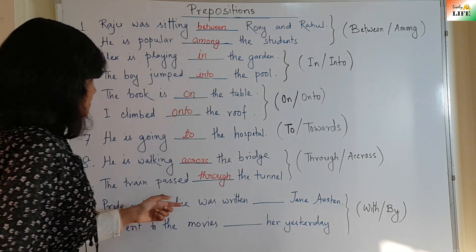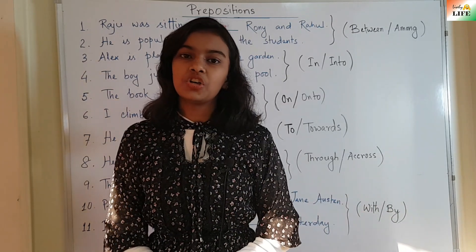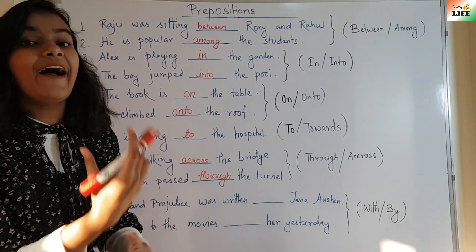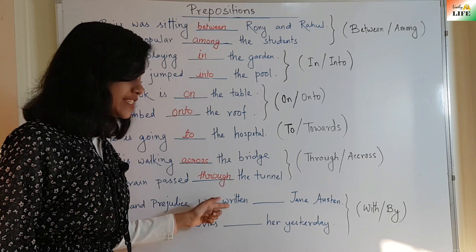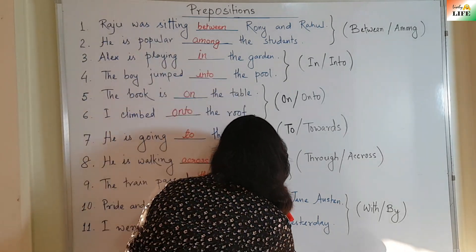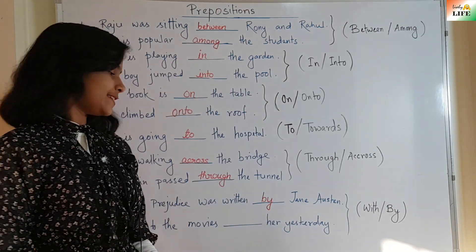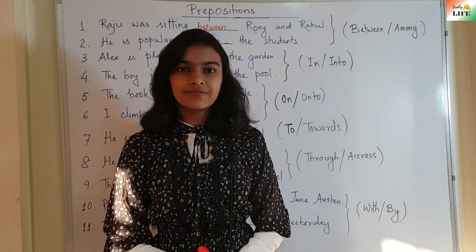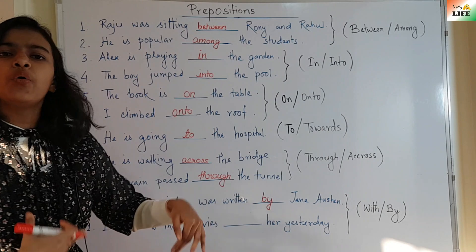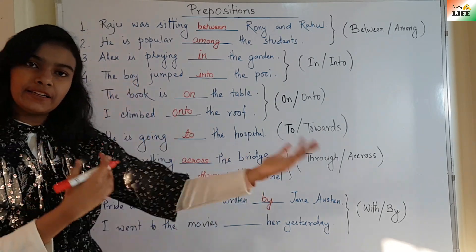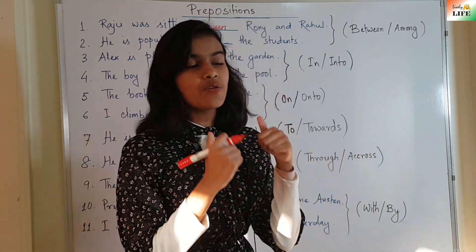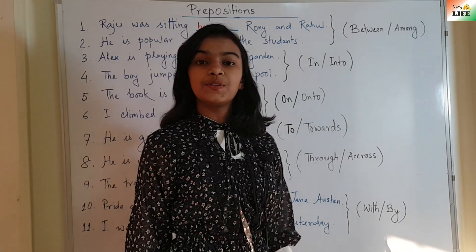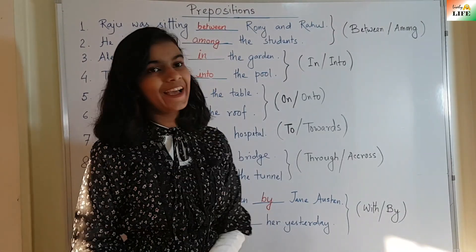Pride and Prejudice was written — Jane Austen. Jane Austen wrote Pride and Prejudice, it was created by her, so: Pride and Prejudice was written by Jane Austen. I went to the movies — her yesterday. I and she both went together, so: I went to the movies with her yesterday. This is the main difference between 'by' and 'with'.